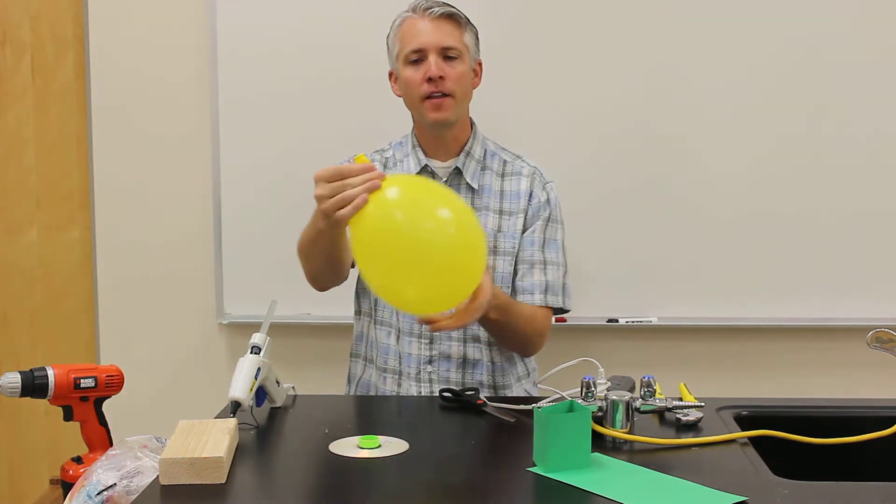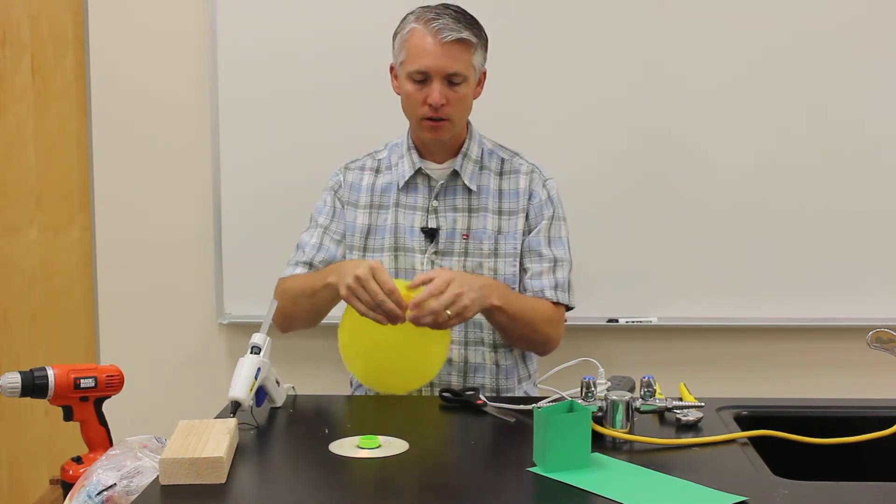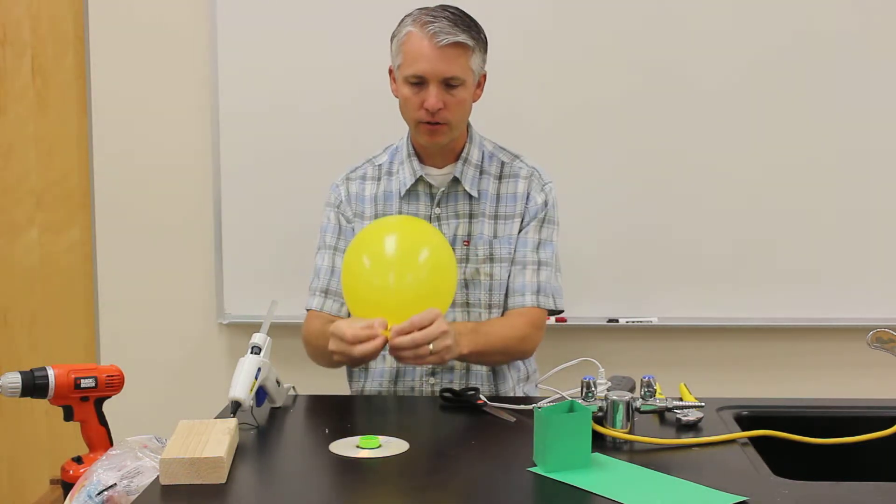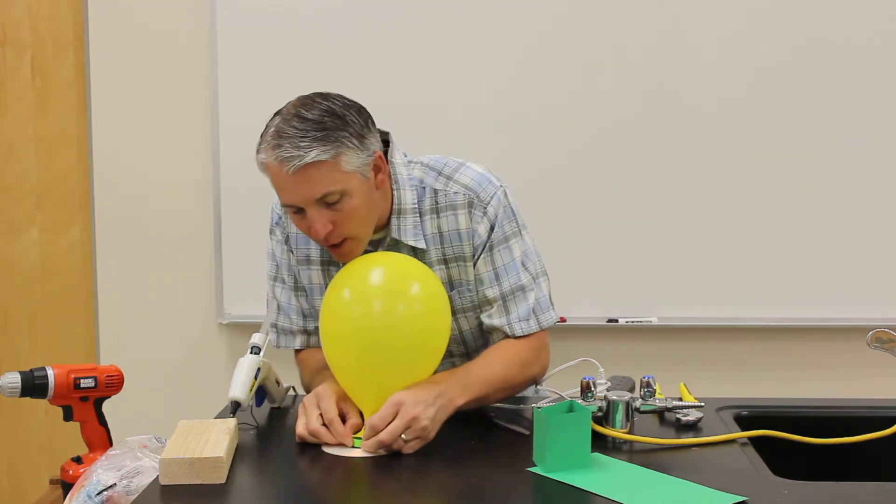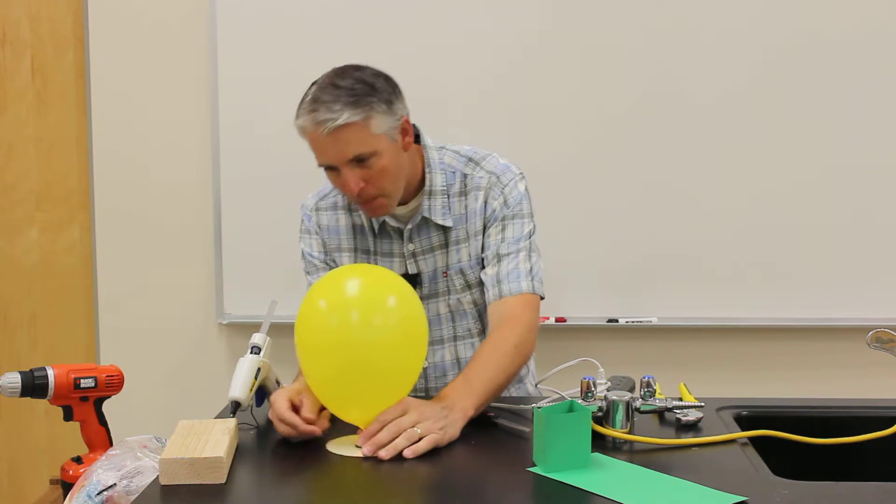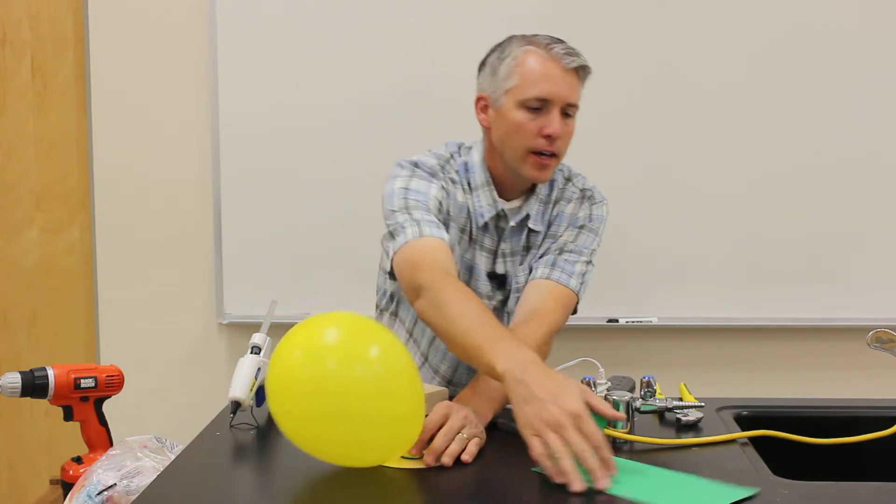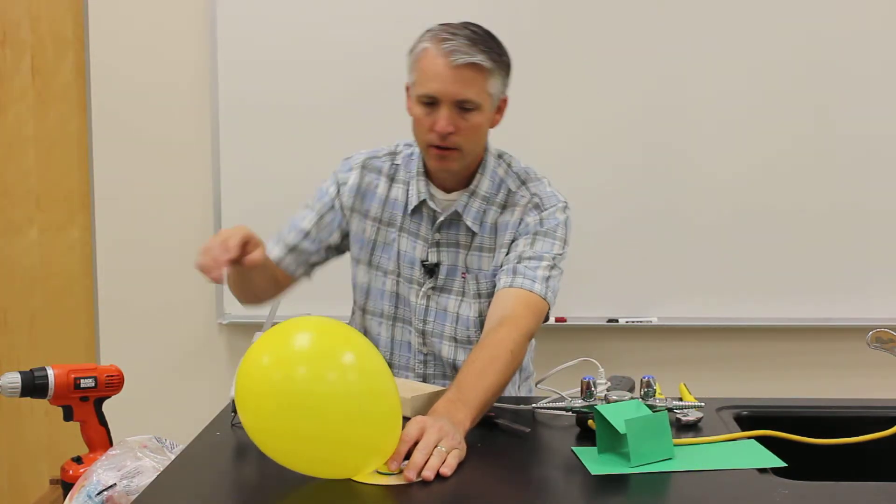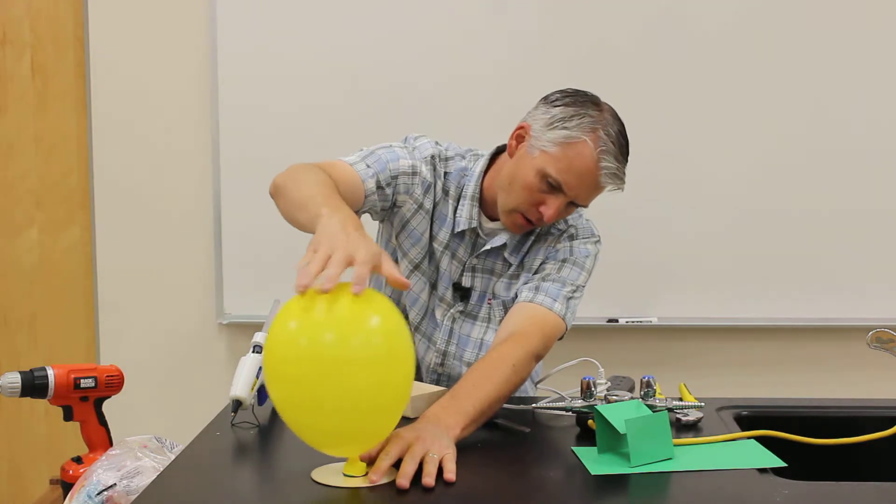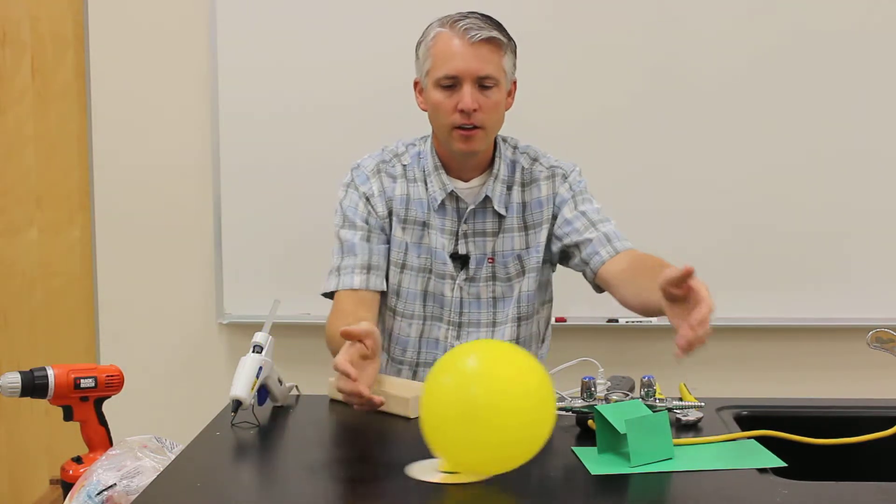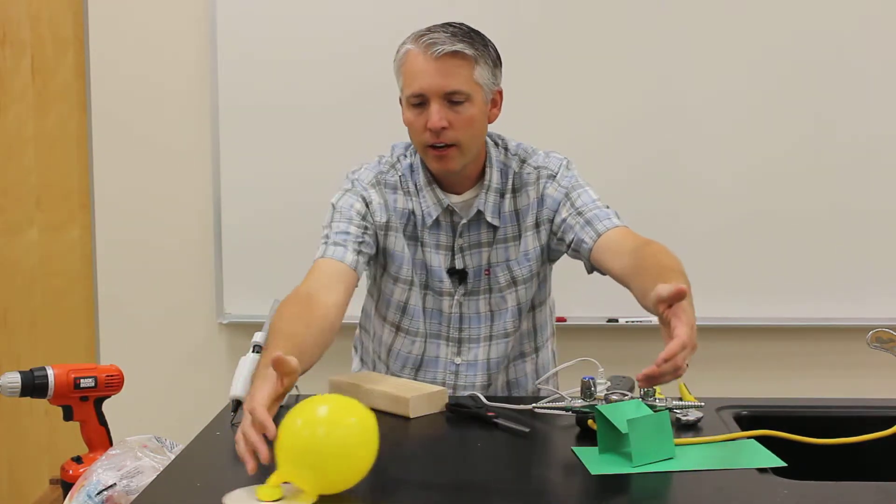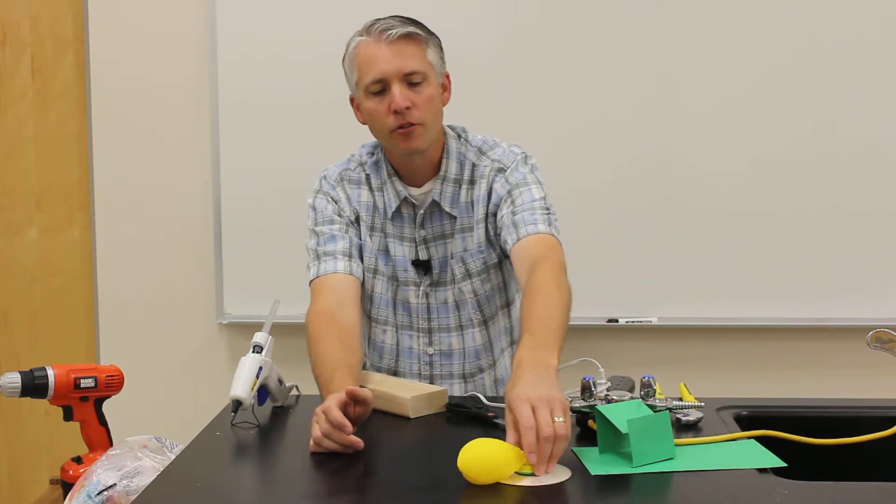Once you've blown it up about that big, you can twist it and then it'll keep inflated while I put it down over the balloon. And you can see here that now when I untwist it, it hovers around like that. But the balloon kind of flops around a bit.